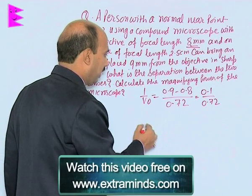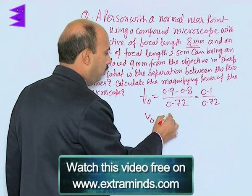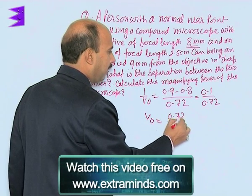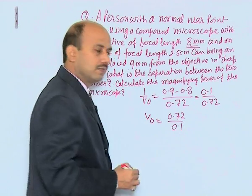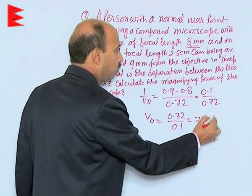In this case we can get V naught is equal to 0.72 divided by 0.1. Then we can take that as 7.2 centimeter.